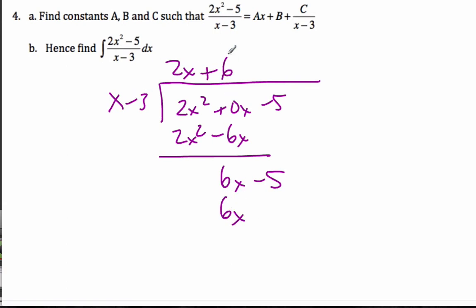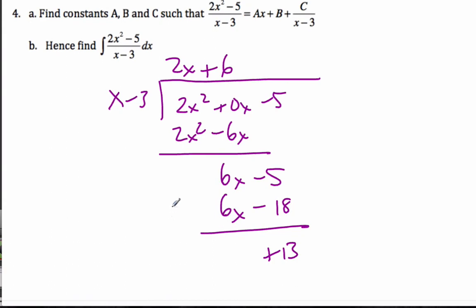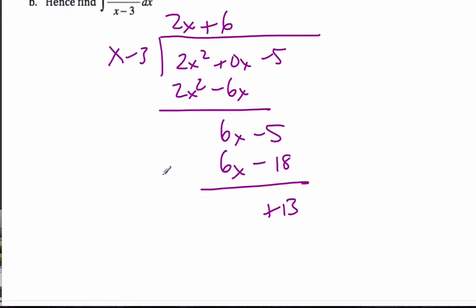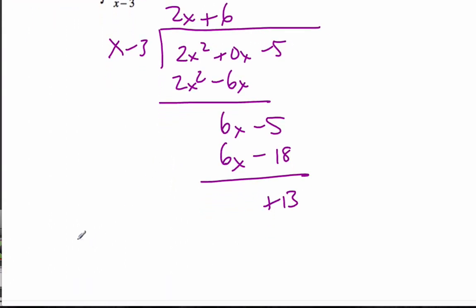Multiply by 6. I get 6x minus 18. Subtract them and I get plus 13 left. And so when I do long division, if you know it, then 2x squared minus 5 over x minus 3 is the same as 2x plus 6 plus 13 over x minus 3. So either method will work fine. This one's quicker if you actually know long division.